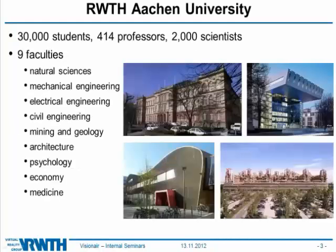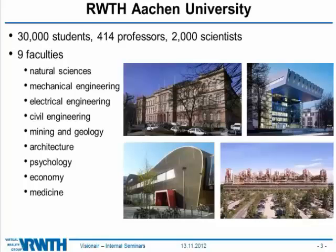RWTH Aachen University has about 30,000 students, 414 professors, and 2,000 scientists, organized in 9 faculties. On the slides you can see photos of important buildings: the main building in the upper left, the Super C conference building in the upper right, the clinical center in the lower right, and the computing center in the lower left, where our offices and virtual reality installations are located.